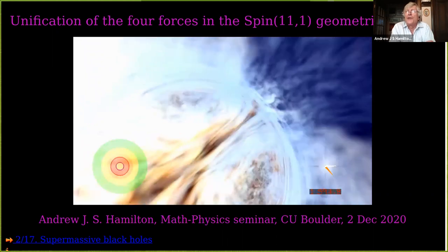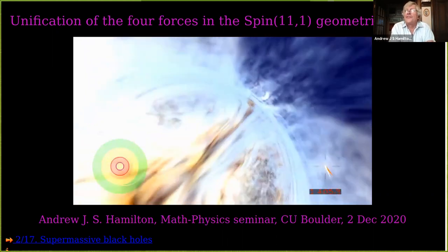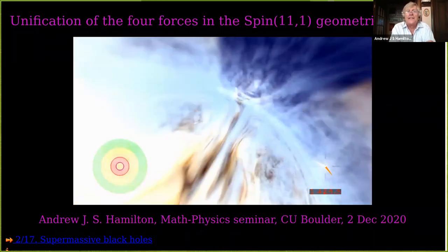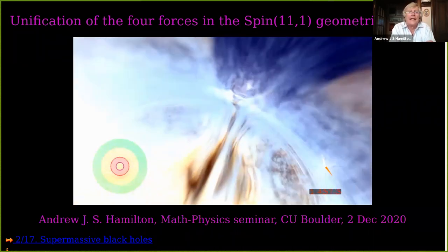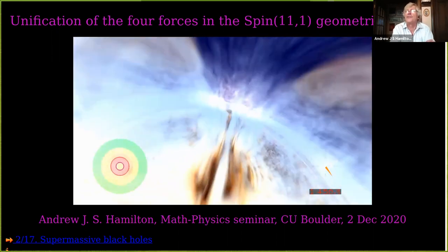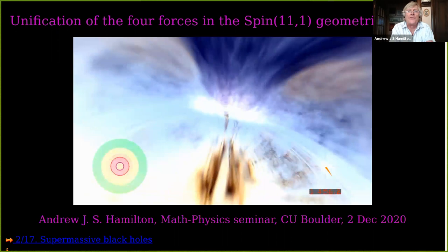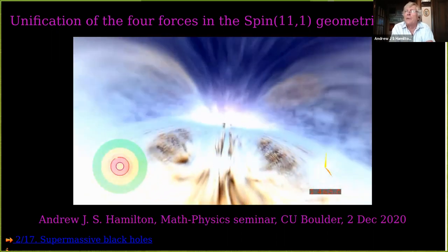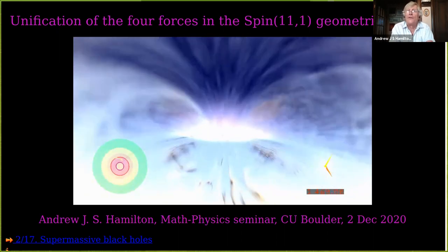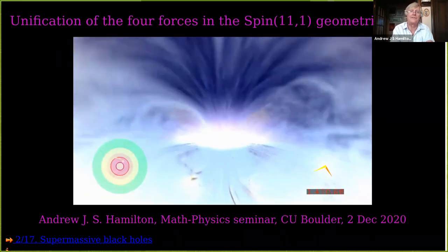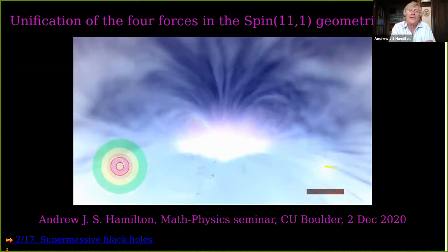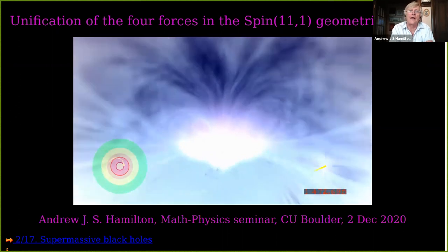In addition to an outer horizon, an astronomically realistic black hole has an inner horizon. In a rotating black hole, there is not only gravitational attraction from the mass, but also centrifugal repulsion from the spin. That centrifugal repulsion essentially slows the inflow of space back to the speed of light, and the inner horizon is the place where space is flowing inward at the speed of light.